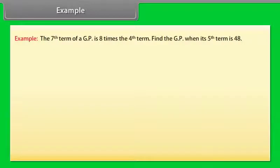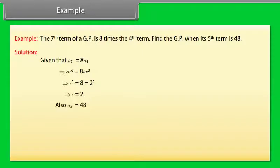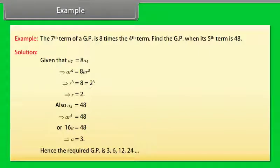Example: The 7th term of a GP is 8 times the 4th term. Find the GP when its 5th term is 48. Solution: A7 = 8·A4 implies A·R⁶ = 8·A·R³, so R³ = 8 = 2³, giving R = 2. Also, A5 = 48 implies A·R⁴ = 48, so 16·A = 48, giving A = 3. Hence the required GP is 3, 6, 12, 24, and so on.